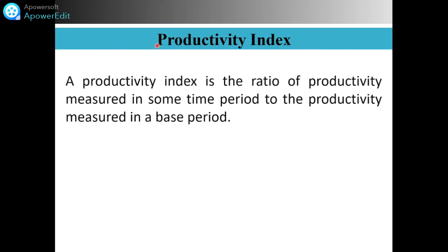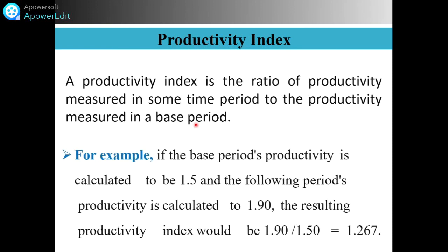Now for the productivity index: the productivity index is the ratio of productivity measured in some time period (which may be a quarter, half year, or yearly) to the productivity of the base period. For example, if the base period productivity is calculated to be 1.5 and the following period's productivity is calculated to be 1.9, then the resulting productivity index is 1.9 / 1.5 = 1.267.